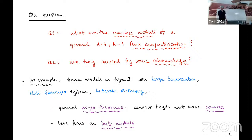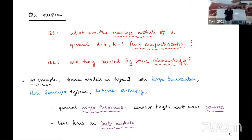I'll remind you that there are some no-go theorems: if you have a compact background with flux, then you have to have some sources around. I'm going to not talk about moduli of the sources, but talk about moduli of the bulk geometry. I don't think I really need much more motivation — you can give your own motivation, maybe from phenomenology. You can also do this for ADS/CFT and it will tell you about marginal deformations.